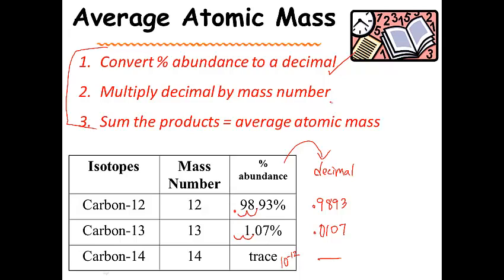Step two is to multiply the decimal by the mass number. So we can take this number times the mass, which is 12. This number times the mass, which is 13. When you do that, for the first example, 0.9893 times 12 gives us 11.8716. And 0.0107 times 13 is 0.1391.